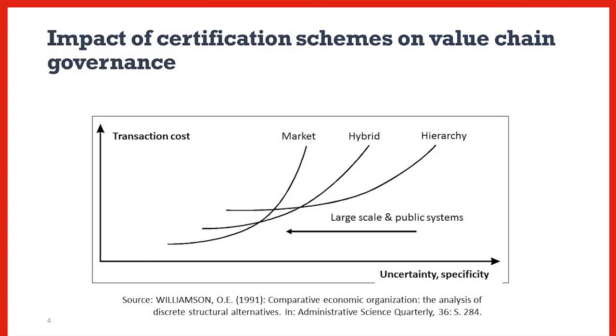So how do quality assurance systems affect value chain governance? Baseline and large-scale systems reduce uncertainty and require no partner-specific investment. This means that buyers and suppliers have more independence and the cost of switching from one buyer or supplier to another would not incur additional costs to adopt another quality and safety standard. This differs for more specific smaller-scale systems, particularly those set up by certain retailers such as supermarket systems. The extra effort a supplier must take to adhere to a supermarket standard and the cost of certification will lead to a tighter bond, as the supplier may be of no value in transactions with other buyers. Some studies have shown that retailers purposely use their own quality and safety standards to exert power over suppliers.